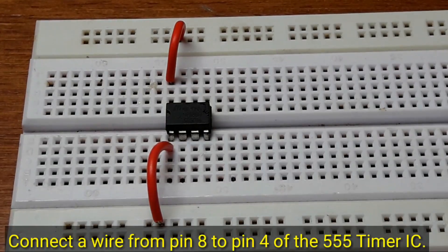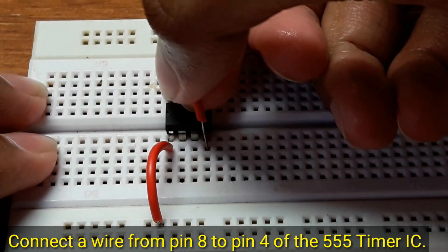Connect another wire from pin 8 to pin 4 of the 555 timer IC.